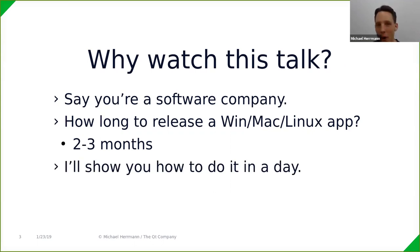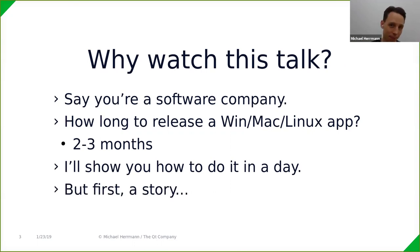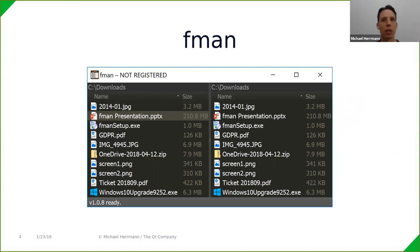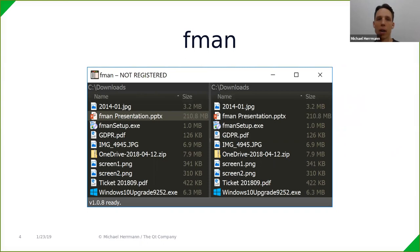Going from just a few source files to your users being able to download your app for three platforms with automatic updates will likely take two to three months. The point of this presentation is to show you how to do it in one day. But before that, let me tell you my story. As Harold said, I'm the creator of Fman — a file manager you use as an alternative to Finder on Mac or Explorer on Windows, for browsing directories, copying files, unpacking archives, and so on.